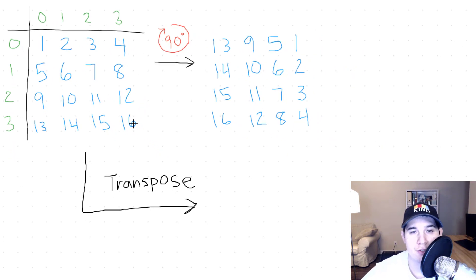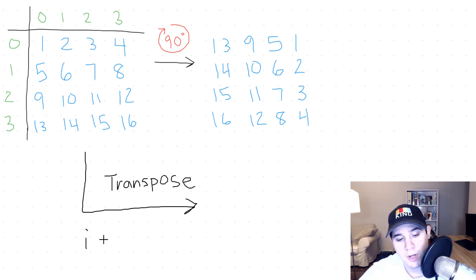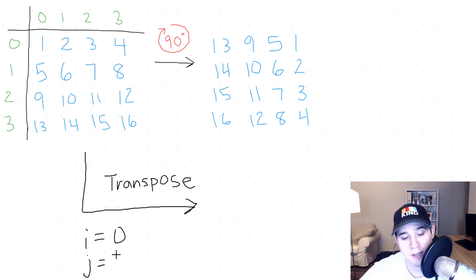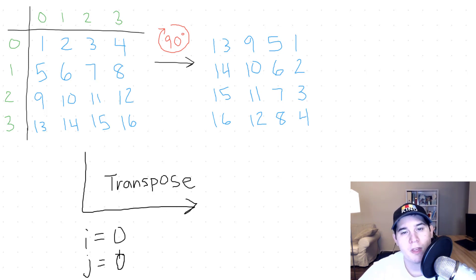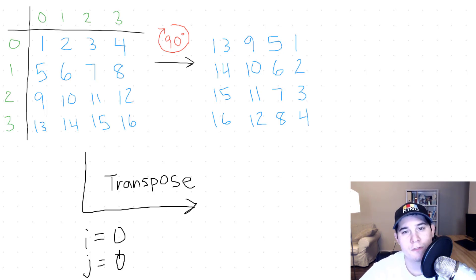We're going to need two different pointers to accomplish this. We'll need an I pointer, initialized to 0. Then a J pointer, which will always start at whatever I is — so if I is 0, J also starts at 0. Our J pointer is a nested loop that will iterate up to N minus 1. On each iteration of this nested for loop, we are going to swap the positions of [I][J] with [J][I].